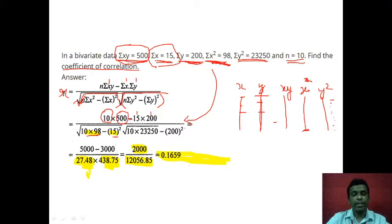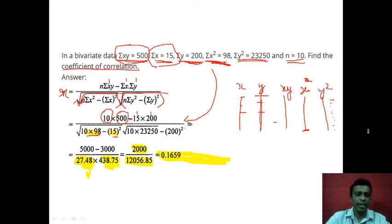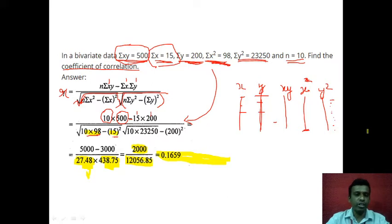Always end the problem with a comment. This is a positive number, so it is positive correlation. Since it is less than 0.5, it is a very weak correlation. Such correlations do not have much practical meaning, but we still calculate and interpret them. The final comment is: it shows weak positive correlation, or very weak positive correlation. This is how you solve this type of problem, which can come in the 5-mark section.